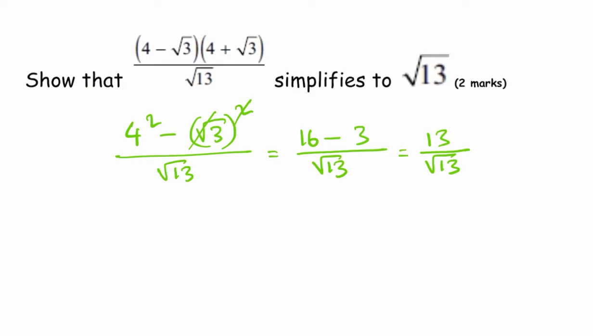Let's rationalize the denominator now. Times top and bottom by root 13. That gives us 13 root 13 over just 13. 13 and 13 cancel out, and that leaves us with just root 13. And that's the answer. We simplify to root 13, and that's worth 2 marks.